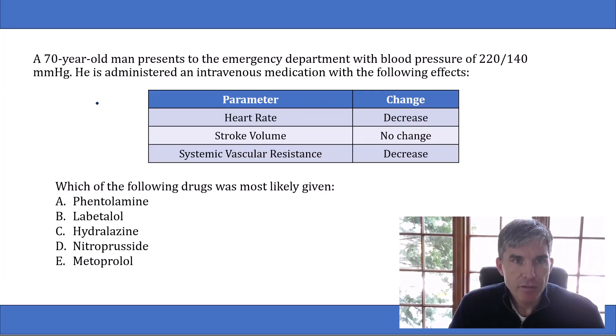So the question says, a 70-year-old man presents to the emergency department with a blood pressure of 220 over 140. He is administered an intravenous medication with the following effects: heart rate decrease, stroke volume no change, systemic vascular resistance decrease. The question asks, which of the following drugs was most likely given? Phentolamine, labetalol, hydralazine, nitroprusside, or metoprolol?